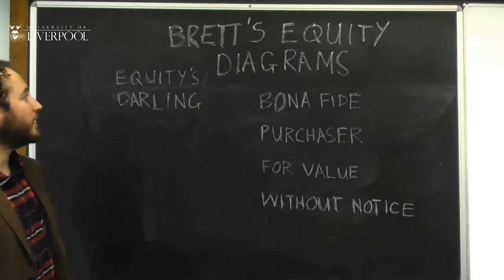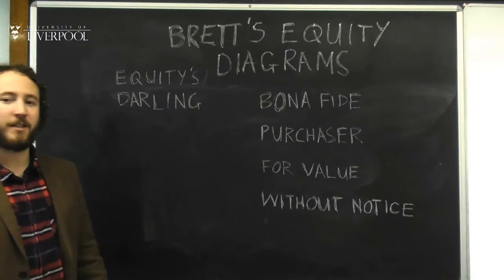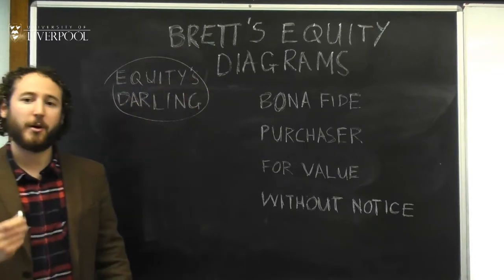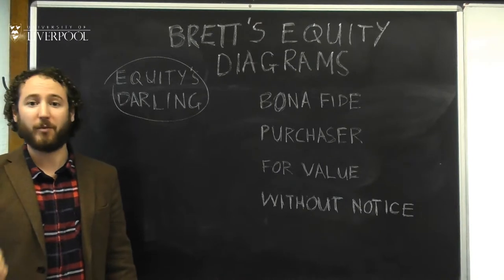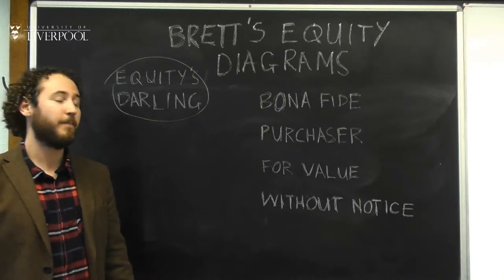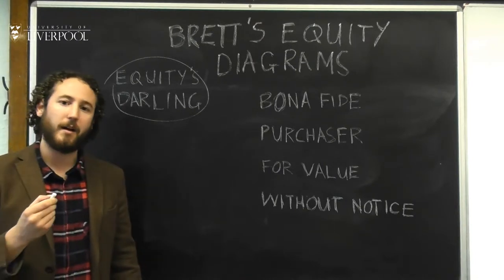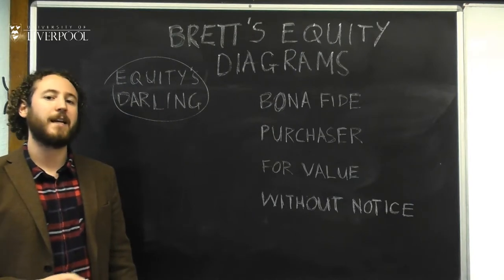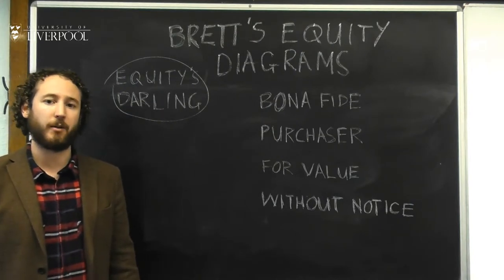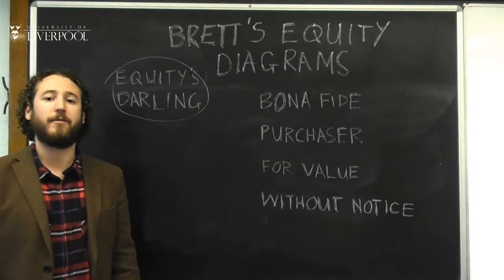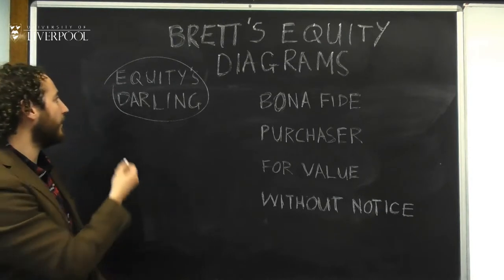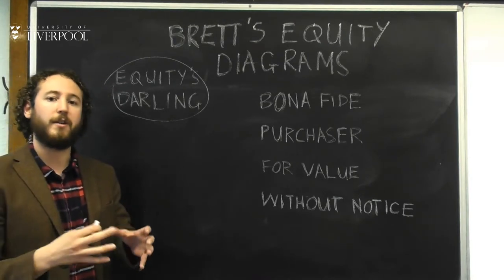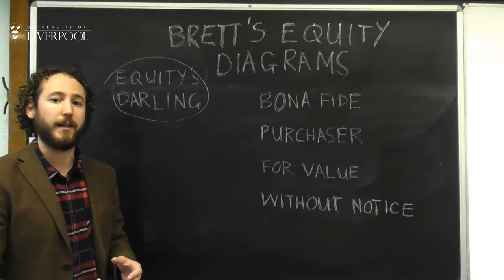Hello. In this video, I'm going to discuss darlings of equity. If you recall from a previous video, if you watched them in order, an equitable proprietary right binds against the whole world except darlings of equity. Therefore, it's very important to know who a darling of equity is so that you know who the proprietary right does not bind.